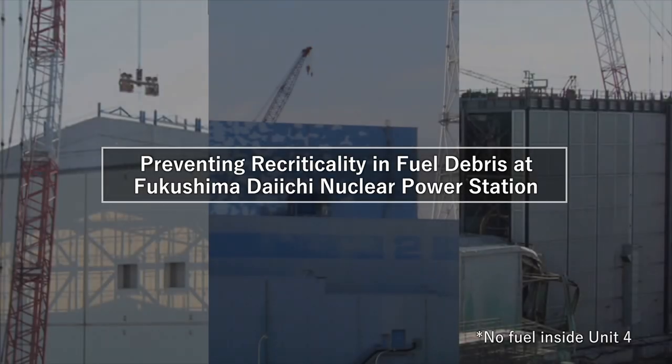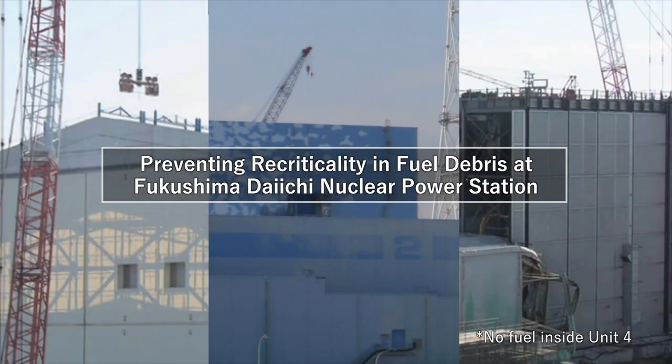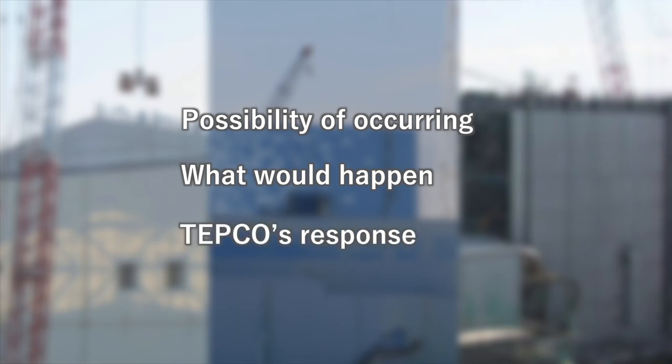This video will explain the conditions of the fuel retained in the reactors of Units 1 through 3 at Fukushima Daiichi Nuclear Power Station and TEPCO's measures to prevent recriticality, the return to a point at which a nuclear reaction becomes self-sustaining in the fuel debris there. Also, to address the following: the possibility of recriticality occurring from the fuel debris, what would happen if recriticality occurs, and what TEPCO would do if recriticality occurred.